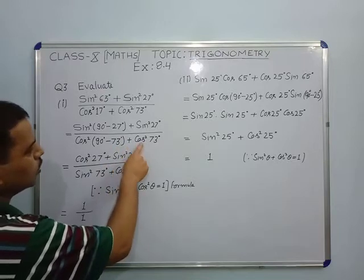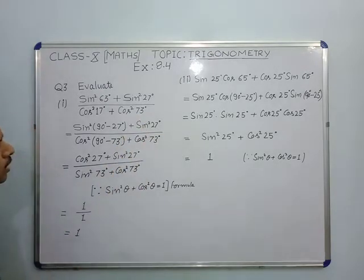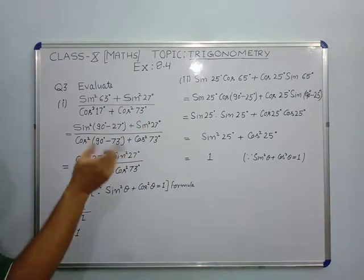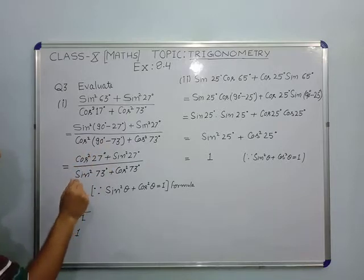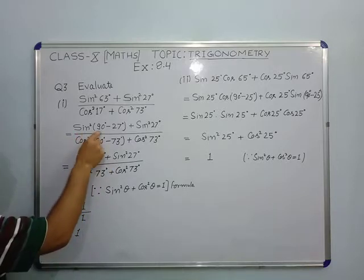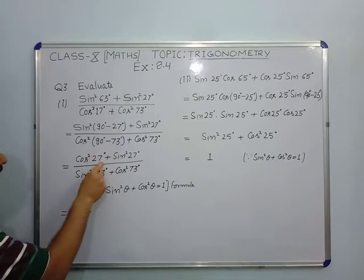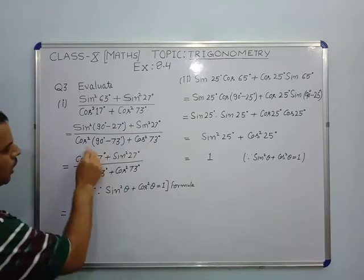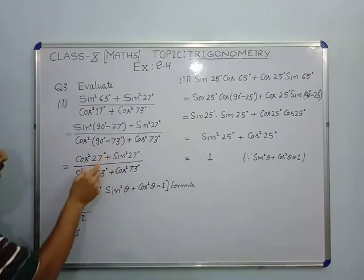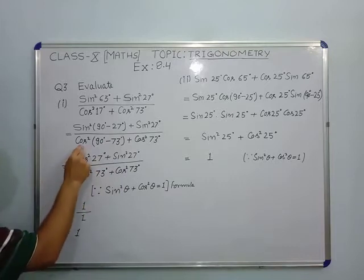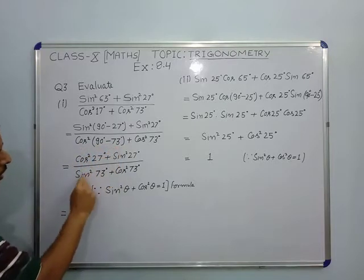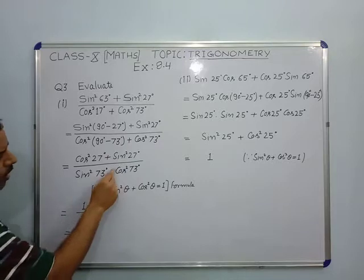And as you know that sin²(90° - θ) equals cos²θ, so sin²(90° - 27°) will be cos²27° + sin²27°. And cos(90° - θ) equals sin θ, so cos²(90° - 73°) will be sin²73° + cos²73°.